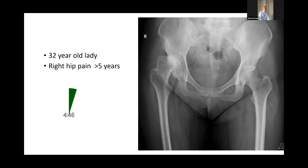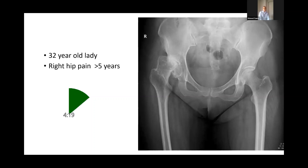Looking at the x-rays, it looks like an AP radiograph of the pelvis showing clear evidence of acetabular dysplasia with severe migration of the femoral head and established end-stage arthritis. I'd want to first take a history from the patient, asking about her symptoms, the pain, the range of movement, the impact on her daily activities and hobbies. And because it's a long-standing problem, I need to know what changed recently and what brought her to clinic today. I also want to know any history of previous surgeries.